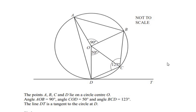Hello and welcome to my channel. In this video we are going to solve an example on circle theorems. The points A, B, C and D lie on a circle with center O — we can see that the points A, B, C and D are on the circle and the center of the circle is given as O.